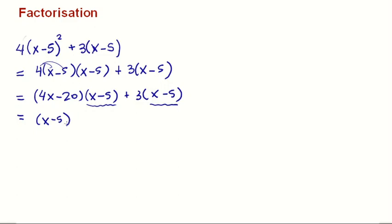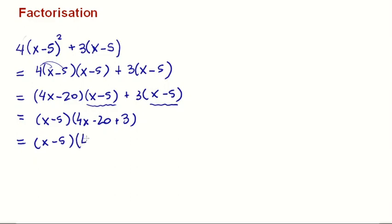We can collect x minus 5 from both terms. What do we have in the first bracket? 4x minus 20. And what from the second? Plus 3. So x minus 5, which multiplies 4x minus 20 plus 3, gives us 4x minus 17. So the answer is x minus 5 times 4x minus 17.